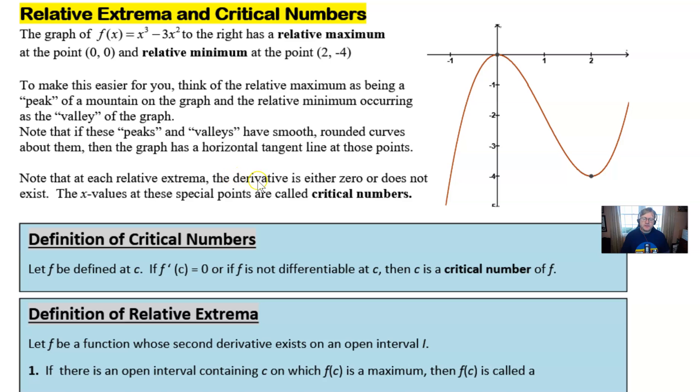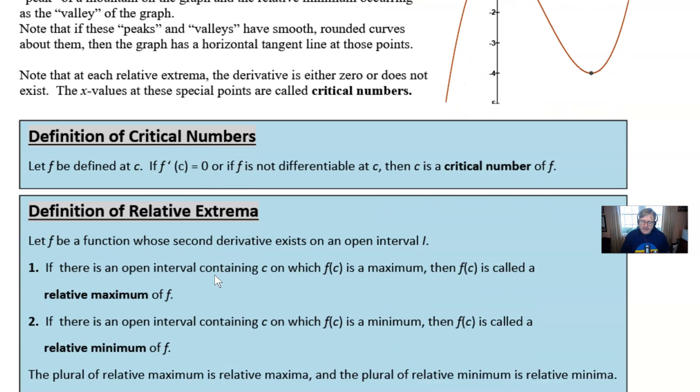Now each of these relative extrema it's really important to note has the feature that the derivative of the function is either zero or does not exist. In this case the derivatives of these positions are zero because they're nice smooth curves. That is so important because that introduces the idea of the critical number and critical numbers are so important because that's where things start to happen with our functions.